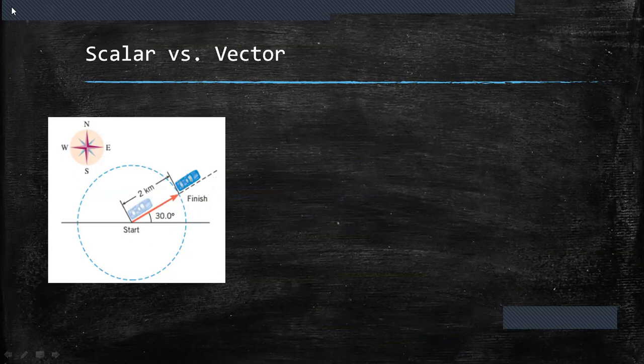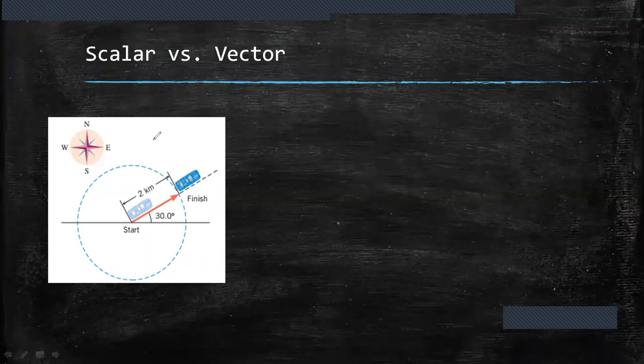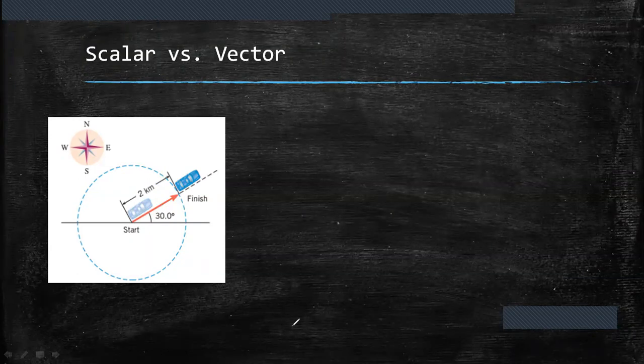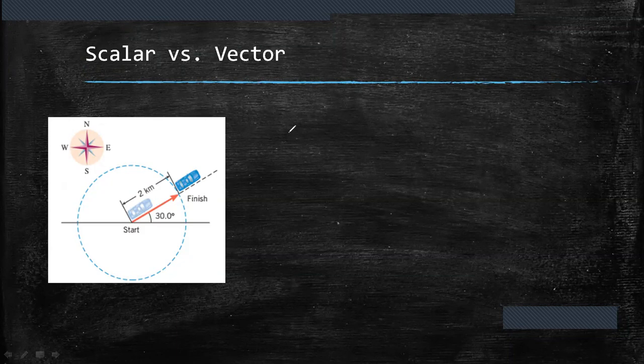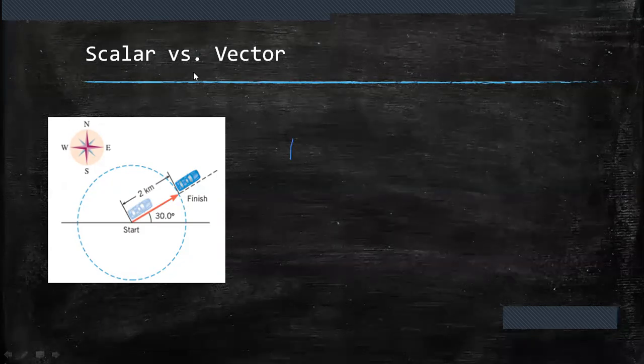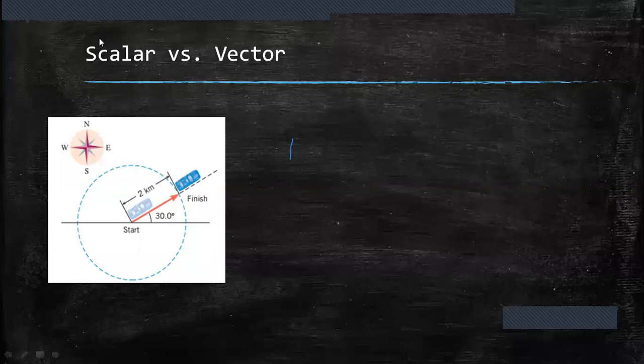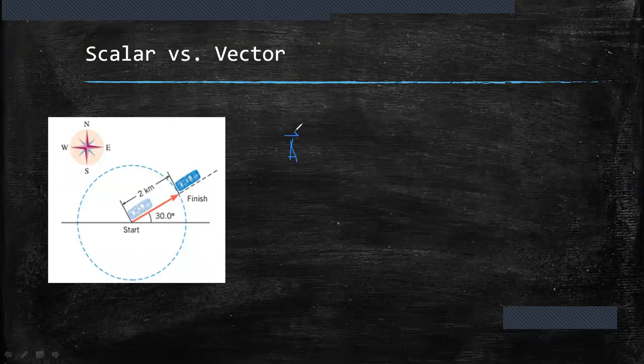In this course, we will represent vectors in symbols with arrow above them. Let's say vector A will be represented with an arrow above it.